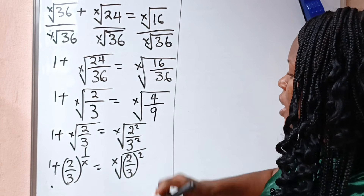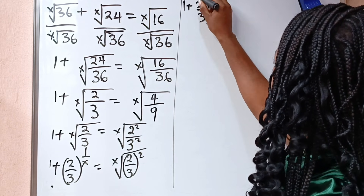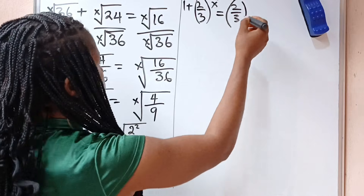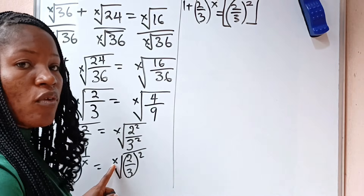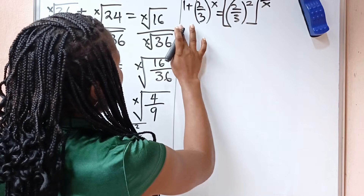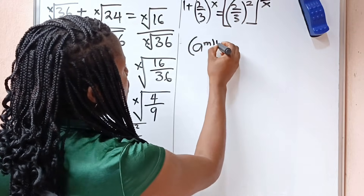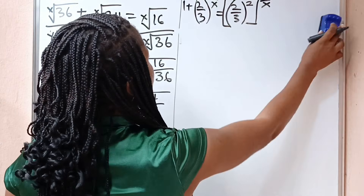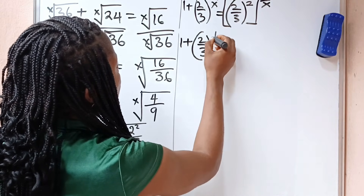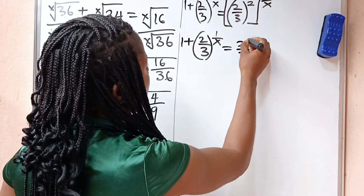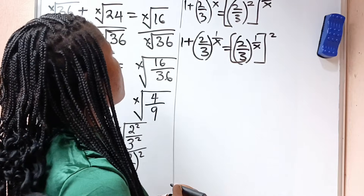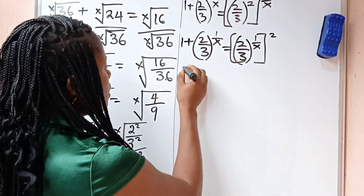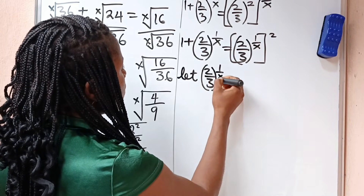So let's continue. Now from here we have 1 plus 2 over 3 raised to the power of 1 over x, is equal to 2 over 3 raised to the power of 2, everything raised to the power of 1 over x. Note that when you have a to the power of m raised to the power of n, you can express this as a to the power of n raised to the power of m. So we can write this as 1 plus 2 over 3 to the power of 1 over x is equal to 2 over 3 to the power of 1 over x, everything squared. Now let's let 2 over 3 to the power of 1 over x be equal to y.